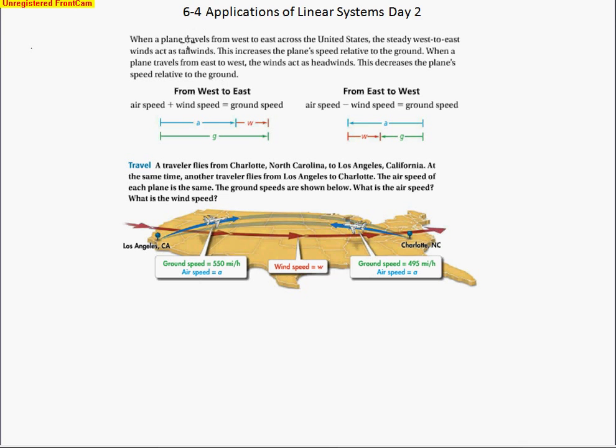So the first thing that we'll see on a lot of these problems deals with this situation. When a plane travels from west to east coast across the United States, the steady west to east winds act as a tailwind. So most of our weather comes from the west and goes towards the east. So you can see that blue line right there represents the wind. So it constantly flows that way. And so this increases the plane's speed relative to the ground speed.